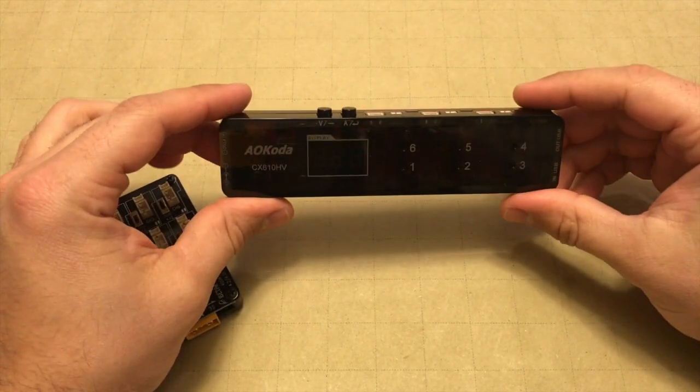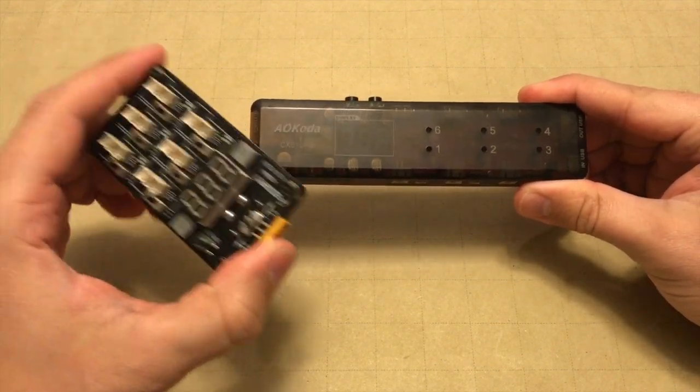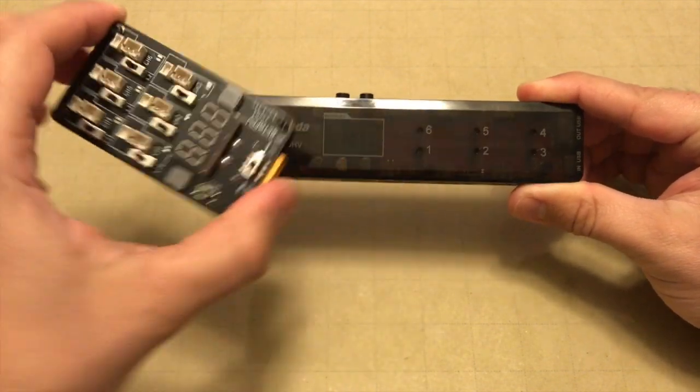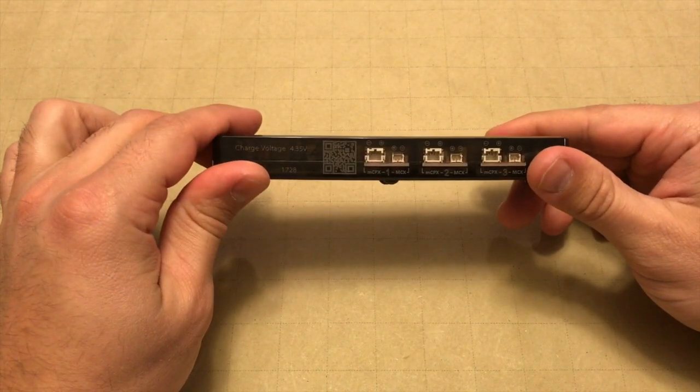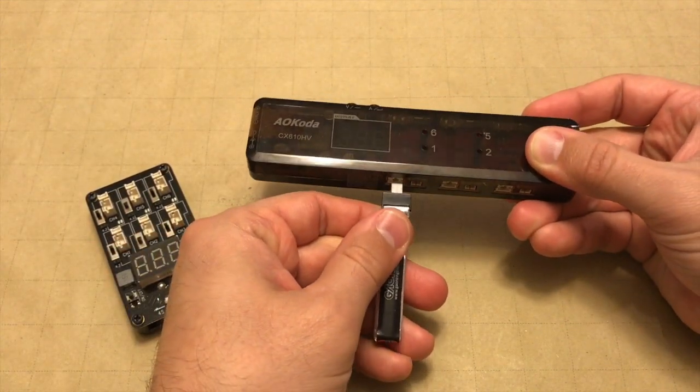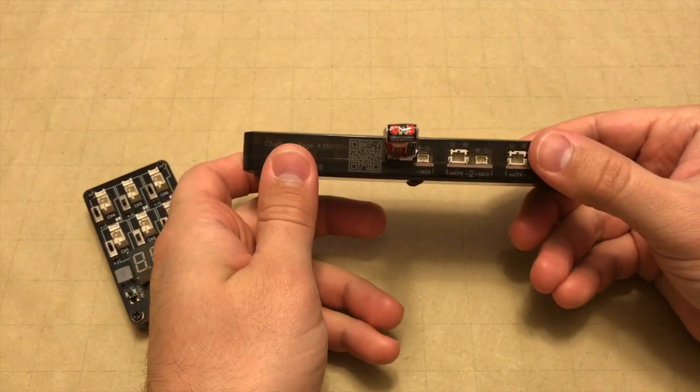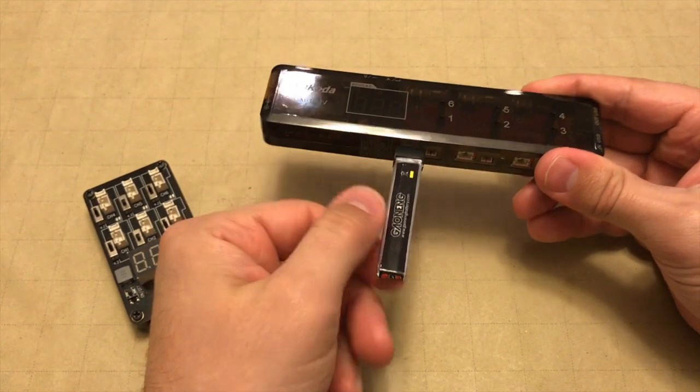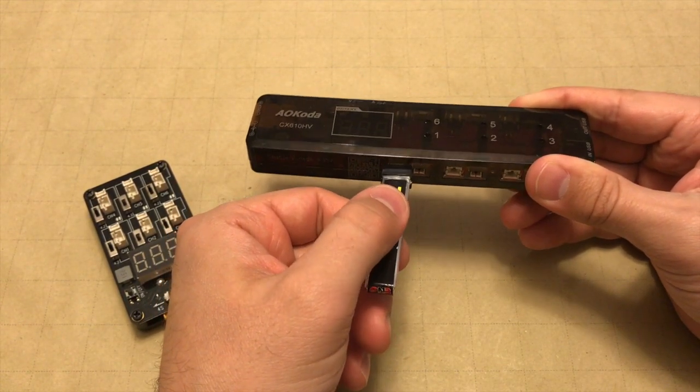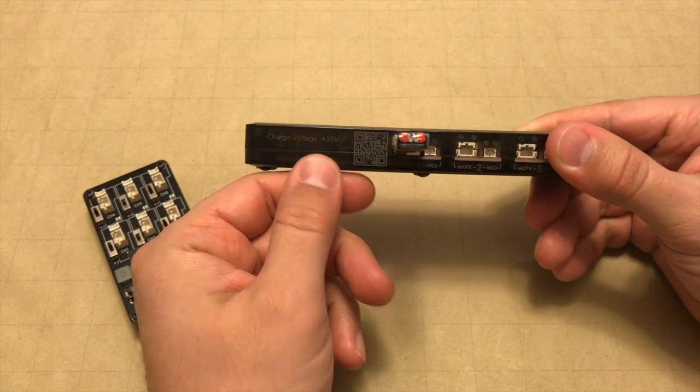The first thing you'll probably notice about the AOCOTA is the form factor is quite a bit different than the battery chargers we've tested so far. It's longer and not quite as wide, and the batteries plug into the side rather than into the top of the board, so when they're plugged in, they're horizontal. And I'm not sure that's my favorite design, just because you've got the weight of the battery that'll slowly pull on that connection. Long term, not sure if it's an issue, but it seems like it's maybe not the best design for that reason.